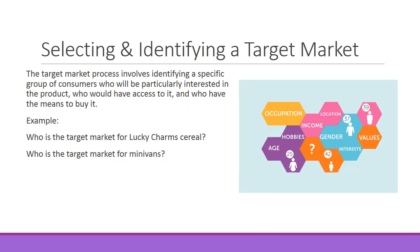The target market process involves identifying a specific group of consumers who will be particularly interested in the product, who would have access to it, and who have the means to buy it. For example, who is the target market for Lucky Charms cereal? Your average seven-year-old probably loves Lucky Charms — doesn't matter if they're a boy or a girl, or if they're in Kansas or Massachusetts. It's a universal cereal that all kids love, so you market it to kids via cartoons.